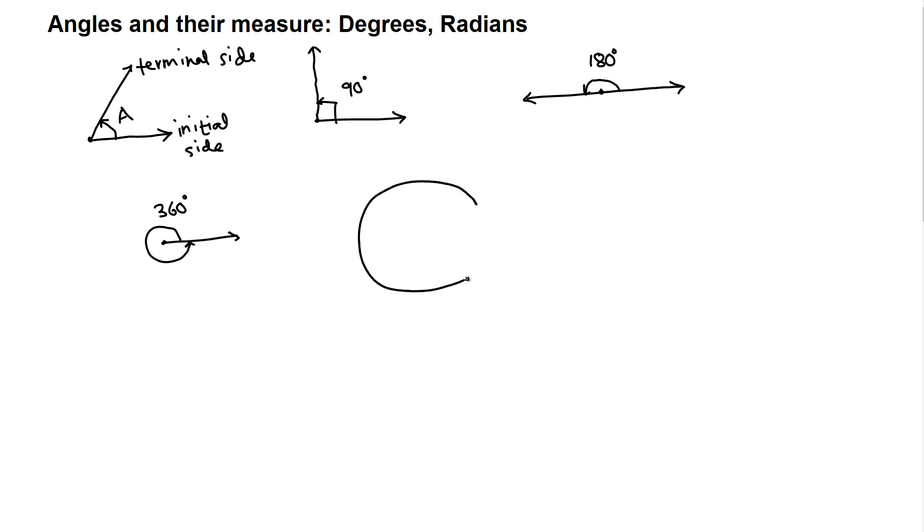Suppose we have a circle of radius R, and if we take this length, this R, it can be measured in inches or feet. That length on this circumference, R, we're measuring this R.